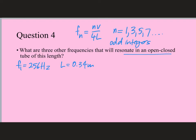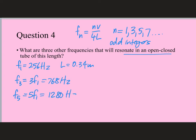The three other resonant frequencies would be: the third harmonic, which is 3 times 256 equals 768 hertz. The second and fourth harmonics are not possible. The fifth harmonic is 5 times 256 equals 1280 hertz. The sixth is not possible, but the seventh harmonic is: 7 times 256 equals 1792 hertz.